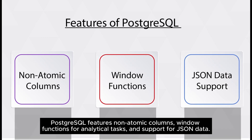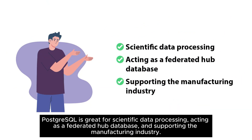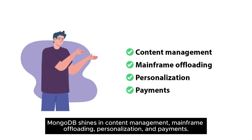PostgreSQL features non-atomic columns, window functions for analytical tasks, and support for JSON data. PostgreSQL is great for scientific data processing, acting as a federated hub database, and supporting the manufacturing industry. MongoDB shines in content management, mainframe offloading, personalization, and payments.